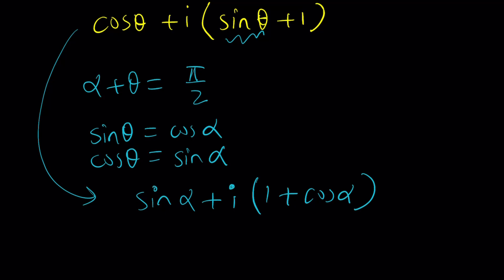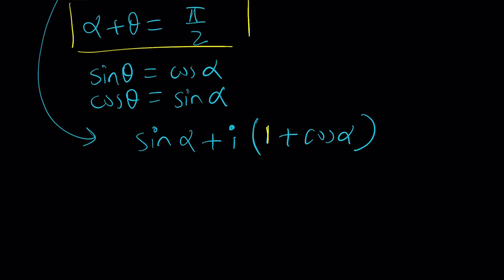You see, there's always a solution. Now let's go ahead and do the switch. We're going to get sine alpha plus i times 1 plus cosine of alpha. Now we can go ahead and simplify this. And then at the end, obviously, we can go ahead and back substitute once we know what alpha is going to look like or what our number is going to look like.